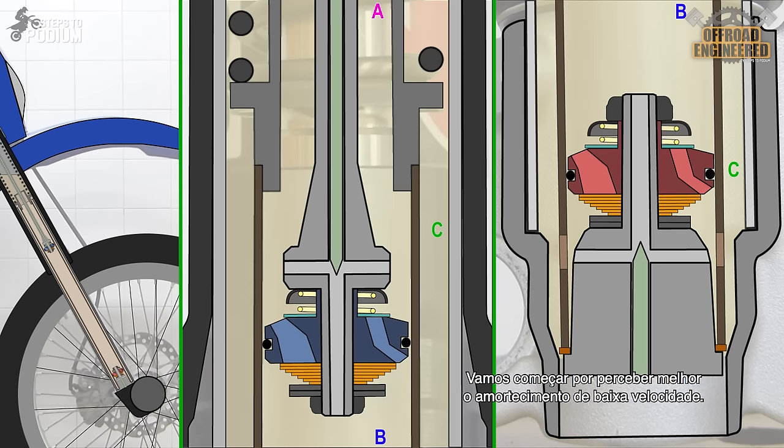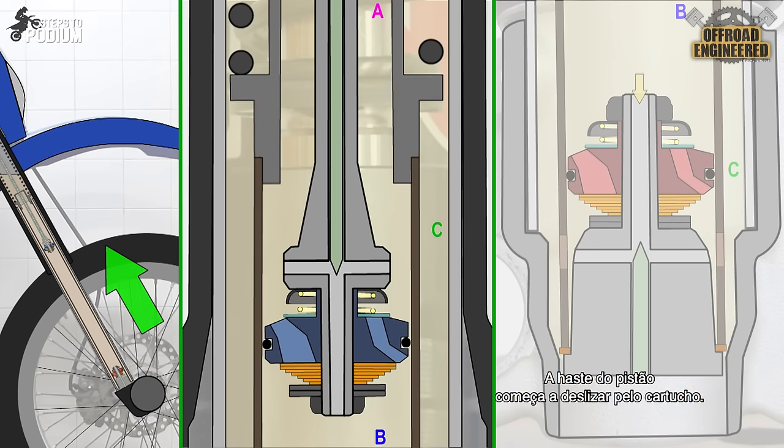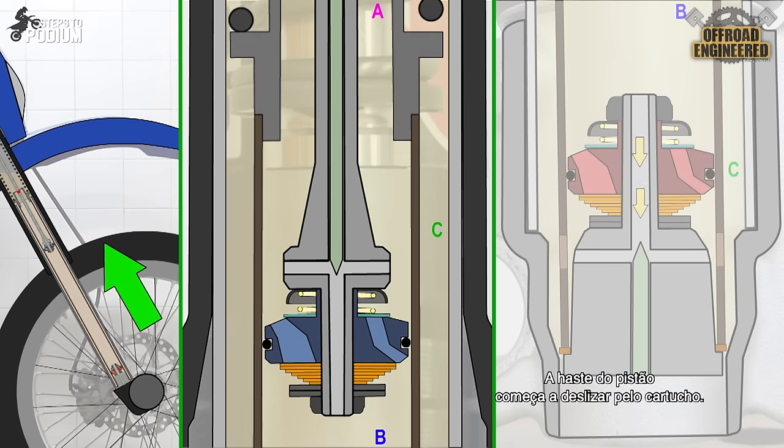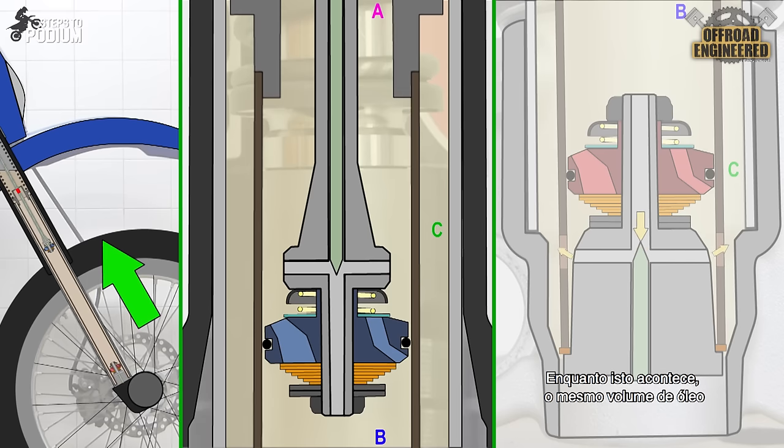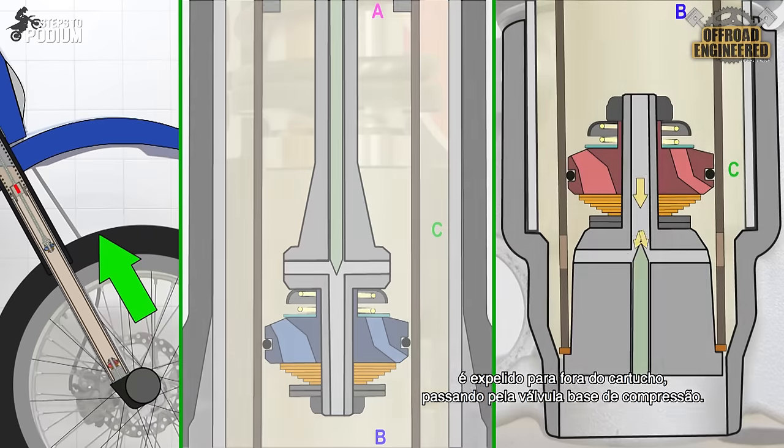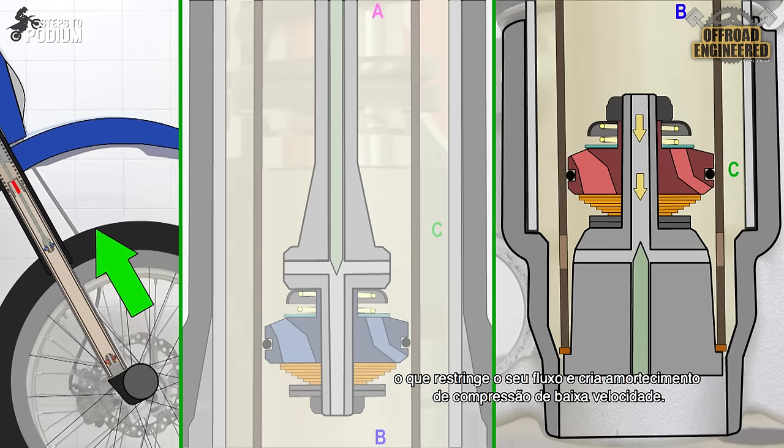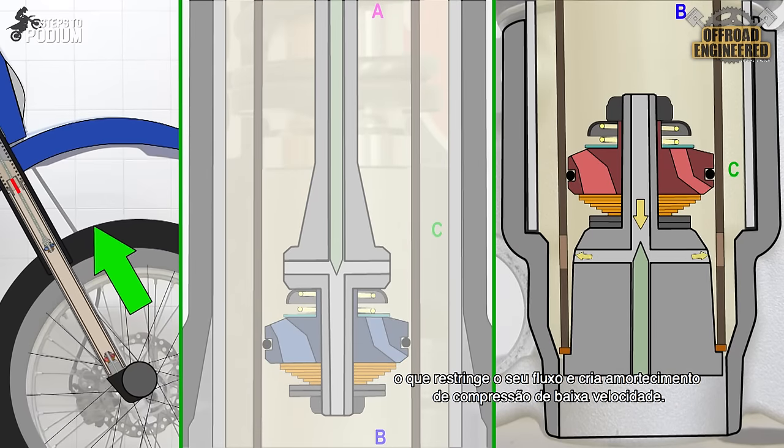Let's understand the low-speed damping first. Imagine the suspension being compressed, which means the piston rod slides down the cartridge. While this happens, the same volume of oil is pushed outside of it, through the compression base valve. The oil flows through the low-speed compression orifice, which restricts the oil's flow and creates low-speed compression damping.